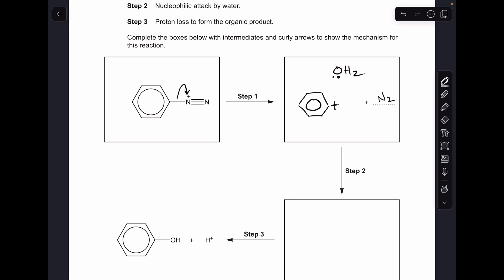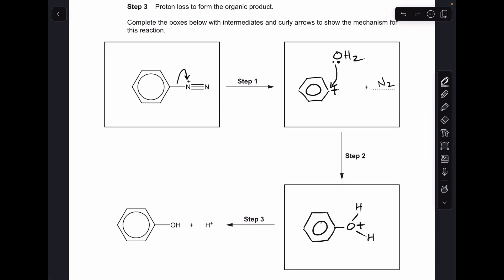Step two, so nucleophilic attack by water. So you can see I've already drawn in the water molecule with its lone pair on the oxygen. So a curly arrow from the lone pair to that carbon-plus. So there's the organic product of step two in the box now.